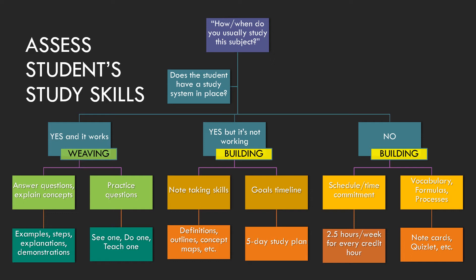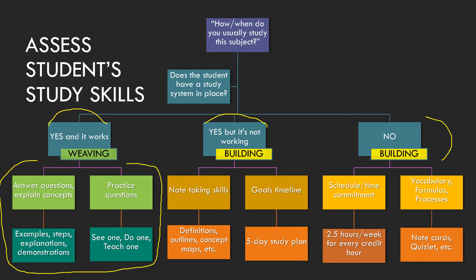Now back to our chart. Once you've assessed whether the student has no study plan, or one that's not working, or a good study plan — let's look at what you do if they do have a good study plan. You're going to weave information into their already existing framework — that's why it's called weaving.